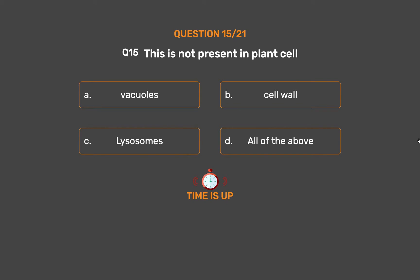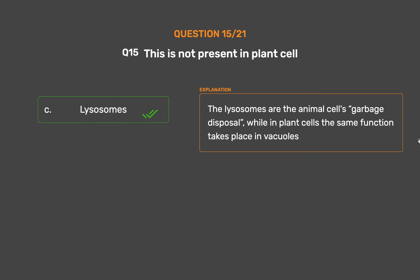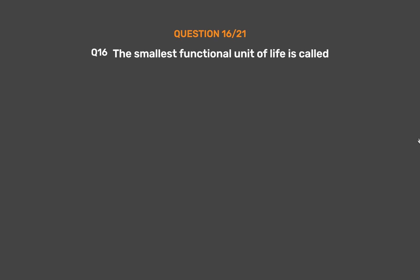The correct answer is Option C: Lysosomes. The lysosomes are the animal cell's garbage disposal, while in plant cells the same function takes place in vacuoles.